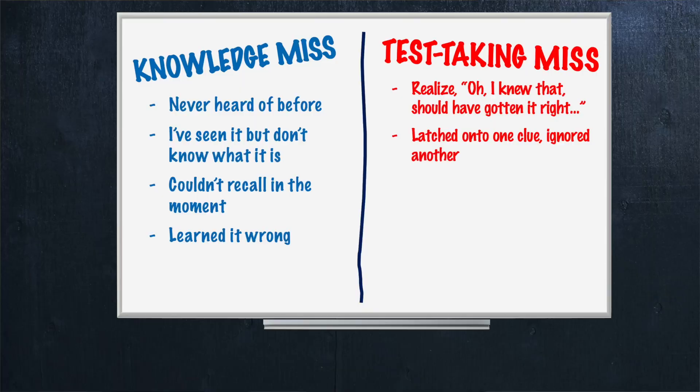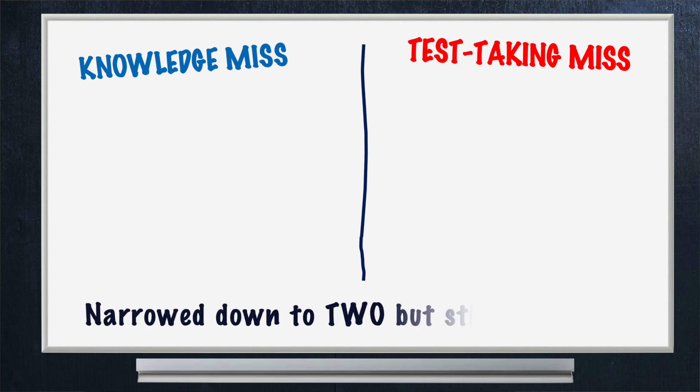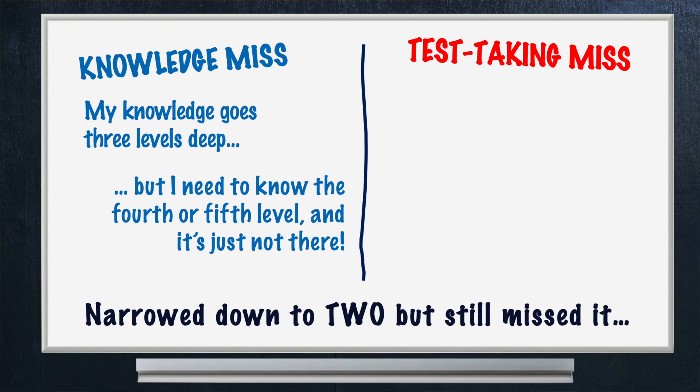A more broad and common statement is when people say, I always narrow down to two and pick the wrong one. This can be a big test taking issue and it's one of the most popular ones we hear. Like with other bad test taking phenomena, there are patterns lurking under the surface. But let's also keep in mind, not all tie breaks are inherently test taking in nature — sometimes it's a knowledge miss. A knowledge miss would look like: my knowledge goes three levels deep, but I need to know the fourth or fifth level and it's just not there. That's a fair miss and needs to be fixed by improved studying — getting into the organizing, encoding, storing, and retrieval circuits.